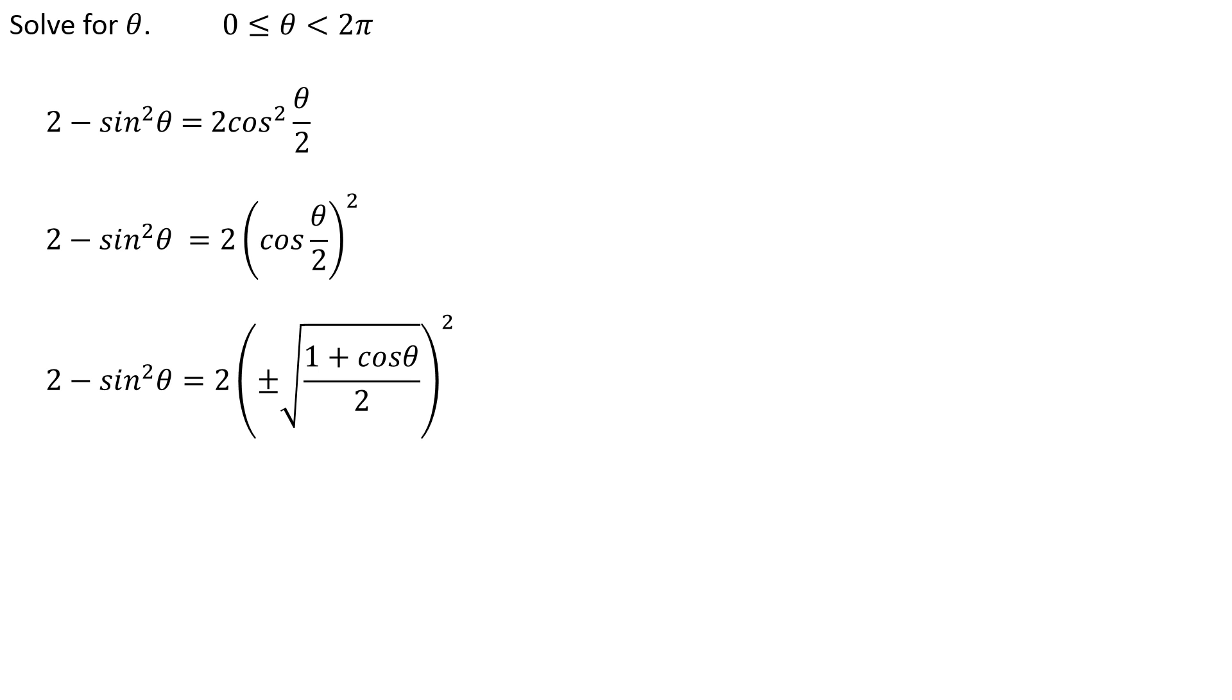And, of course, square root squared, those cancel out. So the plus or minus is gone because we squared it. It must be positive. The square root symbol is gone because we squared it. Now, I can just use the distributive property. And I just have 1 plus cosine θ.